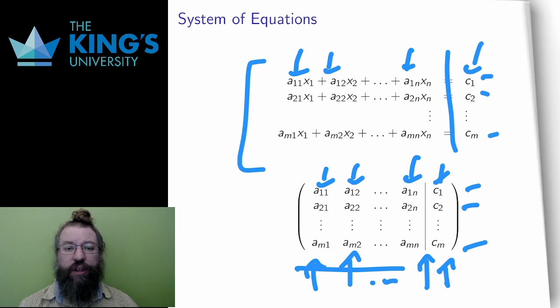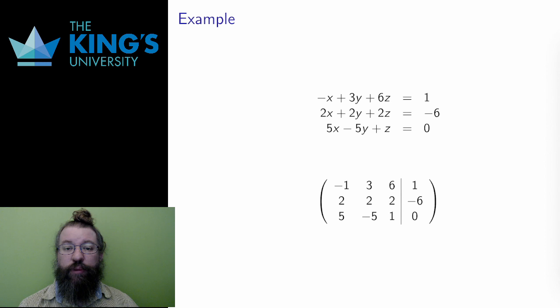Let me show you an example. Here is a system of three equations and three variables: x, y, and z. I write the equations with all the variables on the left and the other constant on the right.